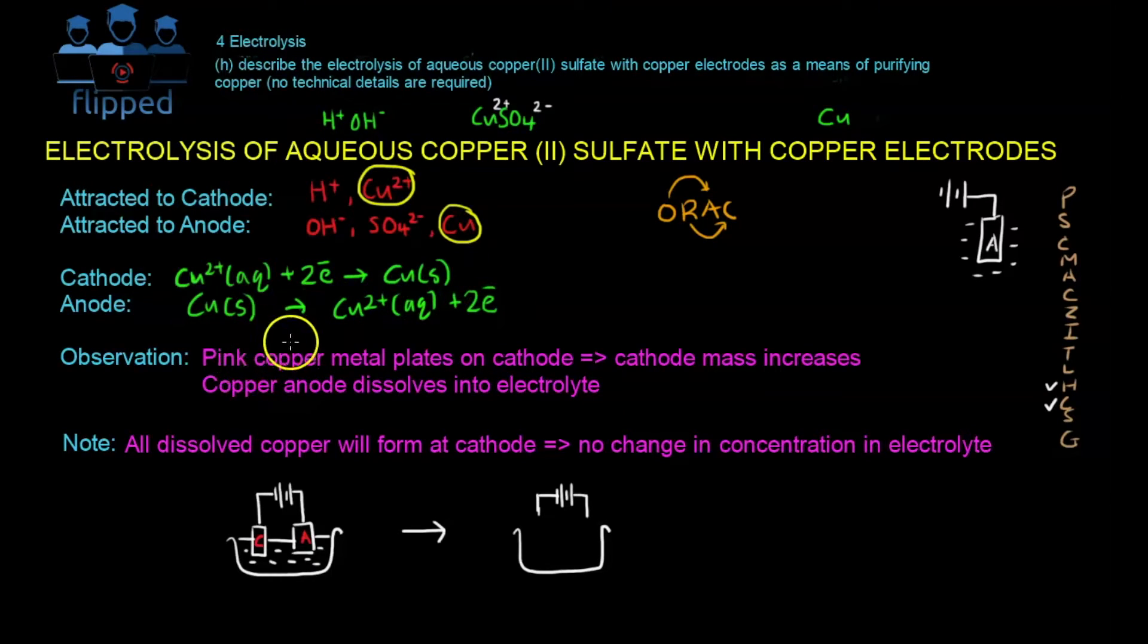The observation is that pink copper metal will plate itself on the cathode, and now the cathode mass increases. You can see that this is the copper in the solution. There is Cu2+ - actually, all of them are filled with Cu2+ ions. It will take in electrons at the cathode and plate itself at the cathode. And that's why the mass of cathode increases.